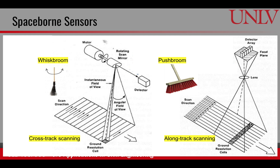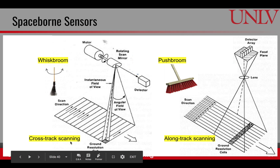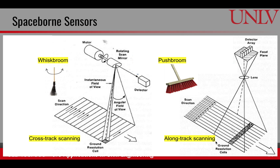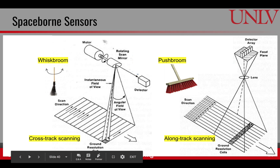The typical sensors used for space-borne remote sensing are scanners, and there are two types: the cross-track scanner and the along-track scanner. This tells the direction of scanning. The cross-track scanner is also called the whisk-broom scanner — it scans the surface like a broom, from side to side. The along-track scanner is also called the push-broom scanner, pushing along the surface. The extent of the scan in both cases is called the angular field of view, and on the ground it's called the swath. At any moment, the instantaneous field of view of the scanner is what gets translated to a single pixel in an image.